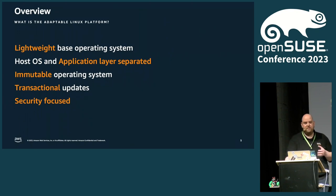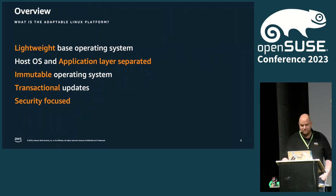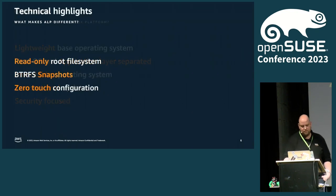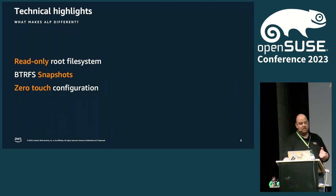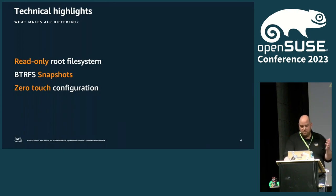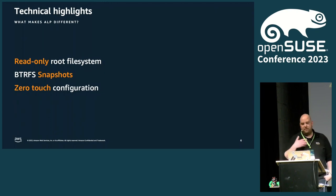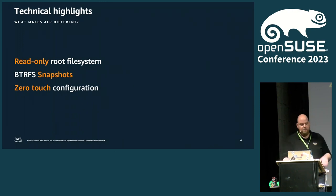If you have just the base operating system, it's immutable. You have SELinux and features like that. The three things I personally like most on the technical side of ALP are: the read-only root file system, which makes it immutable. There are some exceptions — you can edit configurations and have application data — but the core operating system is read-only.